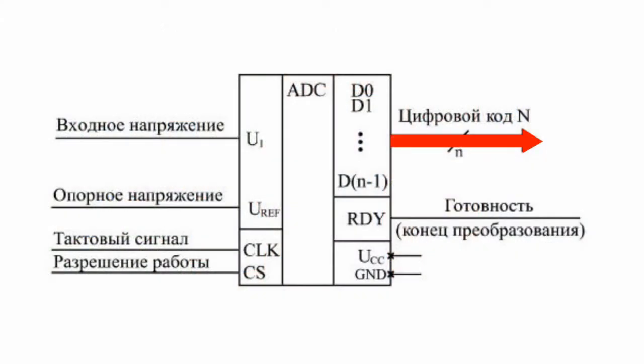The digital output code uniquely corresponds to the input voltage. The code may take values in the amount of 2 raised to the power of n — that is, the ADC can distinguish levels of input voltage in the amount of 2 raised to the power of n. The n number of bits of the output code is the most important characteristic of the ADC.